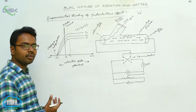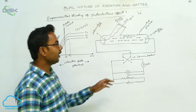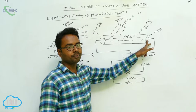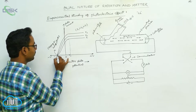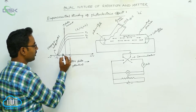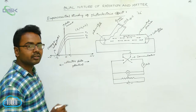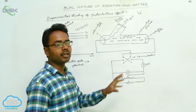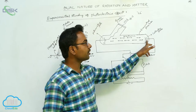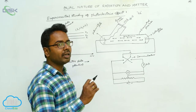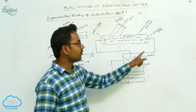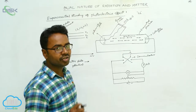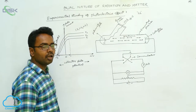Now we discuss the effect of negative potential of the collector plate. When we apply negative potential to the collector plate, the negative potential repels the negatively charged electrons. Since electrons also carry negative charge, the negative potential on the collector plate repels them, so the number of electrons reaching the collector plate gradually decreases as we increase the negative potential. As we increase the negative potential, the number of electrons reaching the collector plate decreases gradually, which decreases the photocurrent.